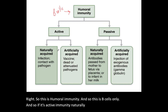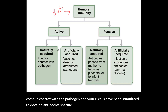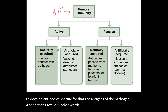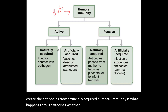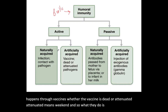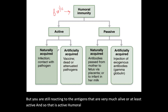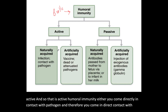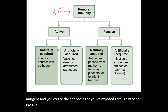With active immunity, naturally acquired means you've actually come in contact with the pathogen and your B cells have been stimulated to develop antibodies specific to that pathogen's antigens. Artificially acquired humoral immunity is what happens through vaccines — whether the vaccine uses dead or attenuated (weakened) pathogens. The pathogenic parts are removed, but you still react to the antigens that are active, and your B cells create the antibodies.